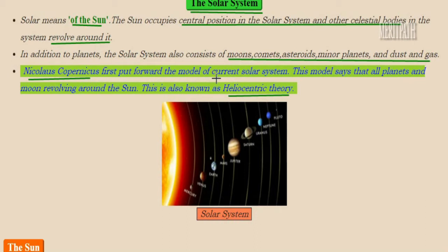Who actually discovered the solar system? A scientist named Nicholas Copernicus put forward the model of the solar system. This theory is known as the heliocentric theory. He proposed that all planets and the moon revolve around the sun. This is the image of the solar system — this is the sun, and these are the nine planets revolving around the sun.